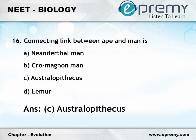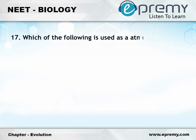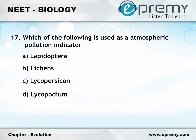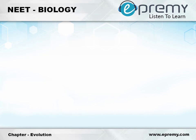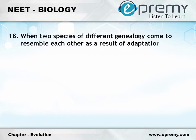Question number 17: Which of the following is used as an atmospheric pollution indicator? Option A: Lepidoptera. Option B: Lichens. Option C: Lycopersicon. Option D: Lycopodium. And the answer is Option B: Lichens.